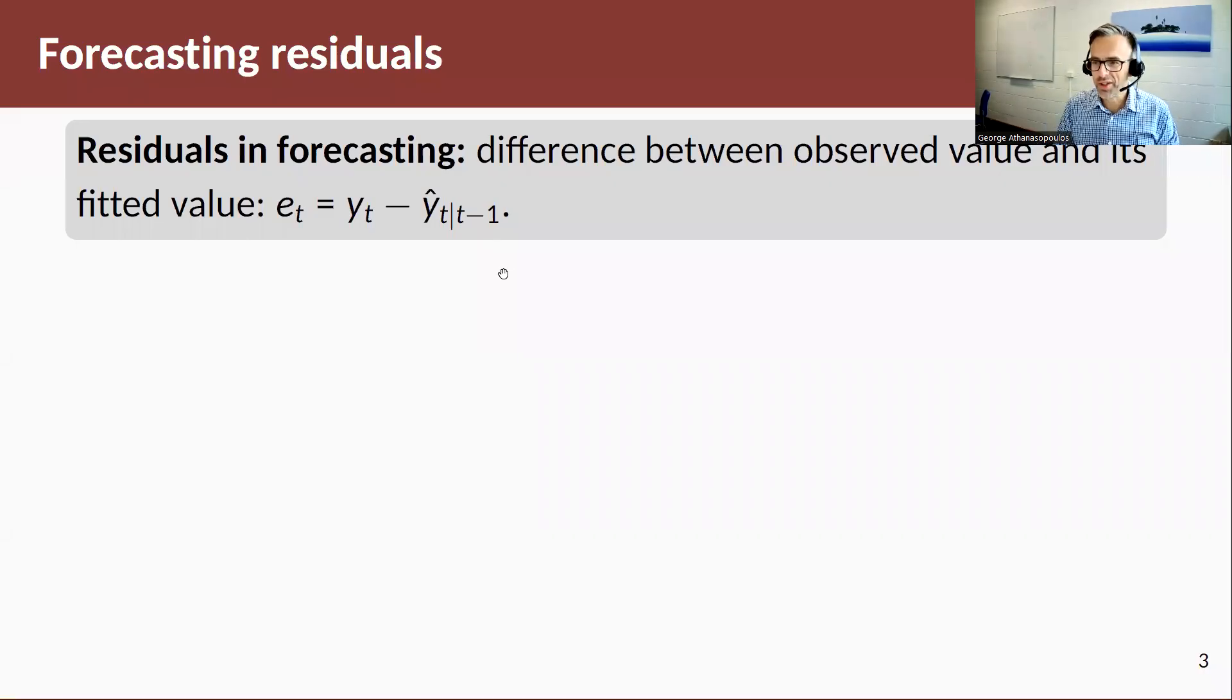Okay, once we get the fitted values, what are these useful for? Well, one of the reasons these are useful is that we can use these to actually estimate our residuals. So residuals in forecasting are the difference between the observed value and its fitted value. Hence, e_t = y_t - ŷ_t.